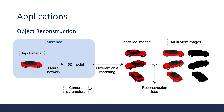We show applications of differentiable rendering on 3D object reconstruction. Given the input image, we design a reconstruction network to reconstruct the 3D model and the camera parameters if not given. Then we use the differentiable renderer to generate the rendered image. We compute the photo consistency loss between the input image and the rendered image, or on multi-view image pairs, then optimize the 3D reconstruction network to minimize this photo consistency loss.